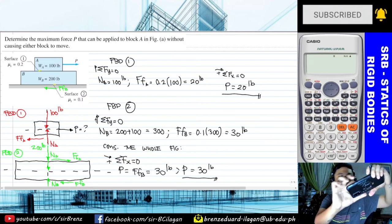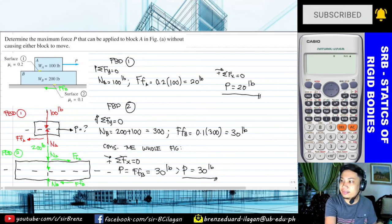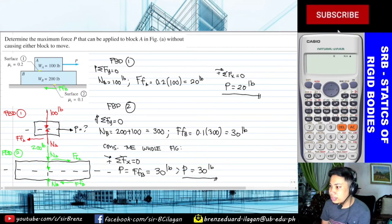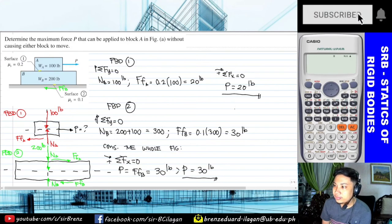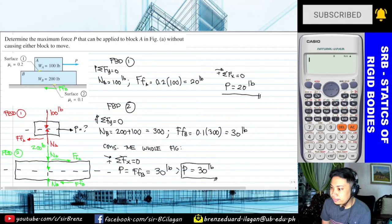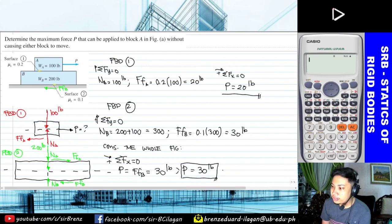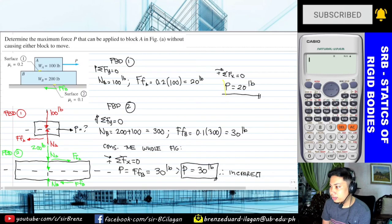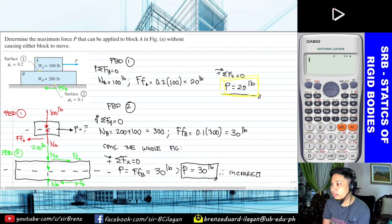Between 20 and 30, which is the maximum? If you answer 30 because it is the larger value, your answer is incorrect. The correct answer for this problem is 20 pounds. Let's analyze why this is the correct answer.